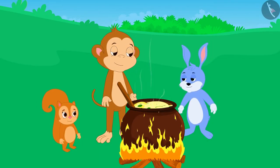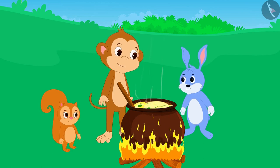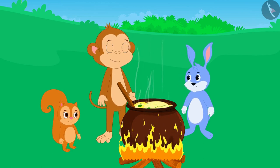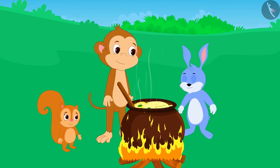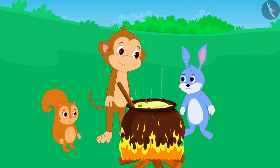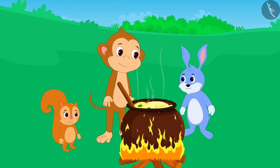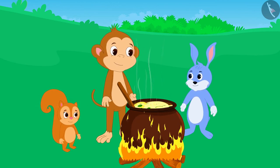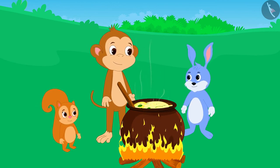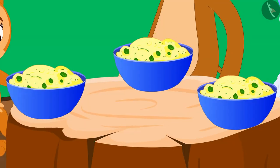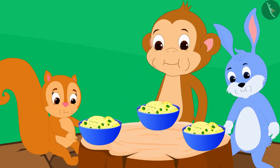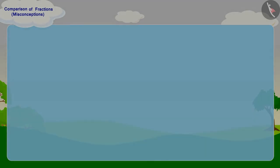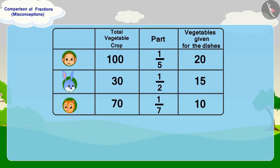Babban explained this to Bunny and Chanda and both of them understood. But Babban said that he does not want the biggest share. The three together happily shared equal portions of the dish and ate it with fun.